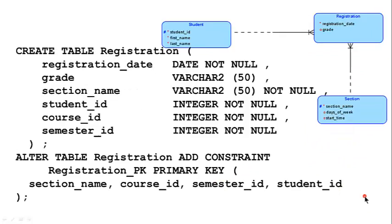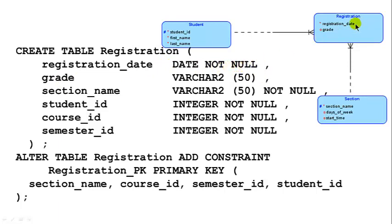Similarly, for registration — same idea. Registration will have the primary key of section plus student. Section's primary key is course ID, section name, semester ID. So the registration table has course ID, section name, semester ID, plus grade — which is optional, so no NOT NULL — and registration date, which is a NOT NULL date attribute.